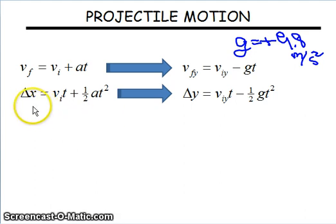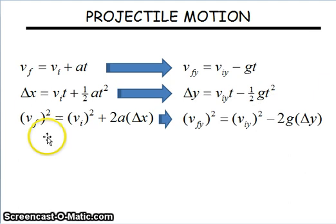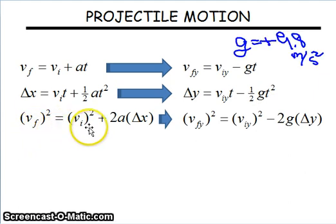Second equation is the displacement equation. The initial has to become the initial y. x is now - we're dealing vertically. We have to separate the vertical from the horizontal. There's y. We replace a with minus g. The third kinematic equation is this one here. V_f has to be V final y. The initial has to be the initial y. A has to be minus g. And x is now y.